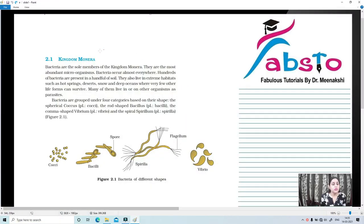So today, let's start with Kingdom Monera. We have studied already that in Whittaker's five kingdom system of classification, all the prokaryotes have been kept in Kingdom Monera. Bacteria are the sole members of Kingdom Monera because bacteria have incipient nucleus.